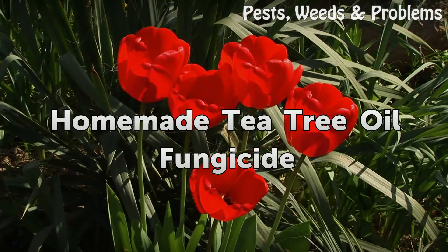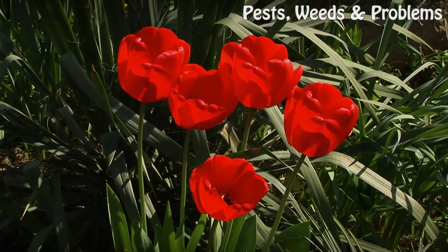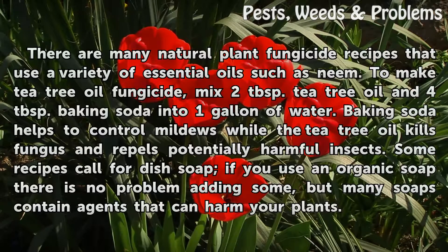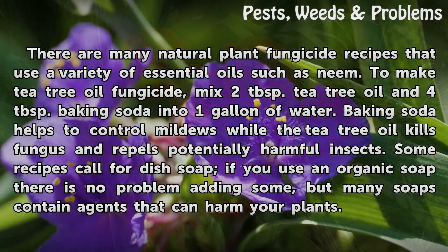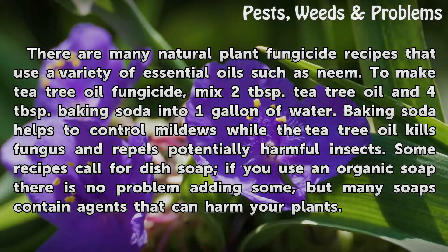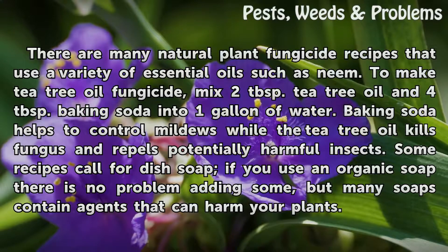Homemade tea tree oil fungicide. There are many natural plant fungicide recipes that use a variety of essential oils such as neem. To make tea tree oil fungicide, mix two tablespoons tea tree oil and four tablespoons baking soda into one gallon of water. Baking soda helps to control mildews while the tea tree oil kills fungus and repels potentially harmful insects.